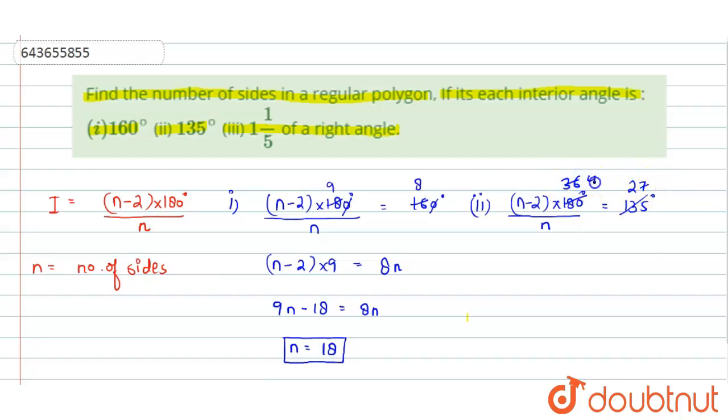Finally we will get 4n minus 8 equals to 3n and from this we will get n is equal to 8. So this is the value of number of sides in the second part.